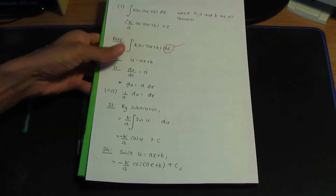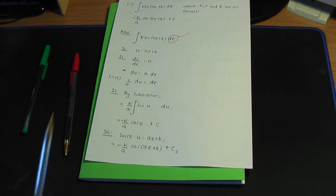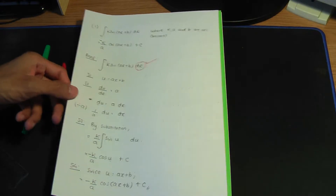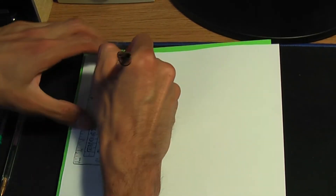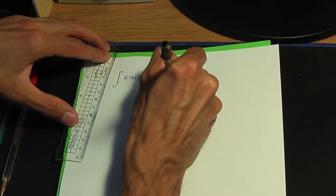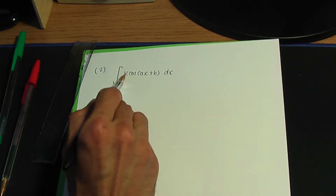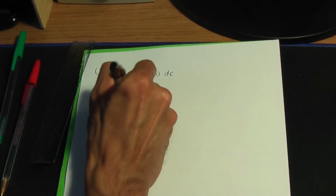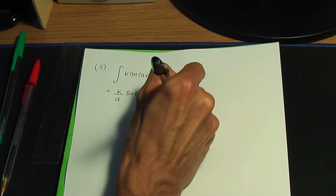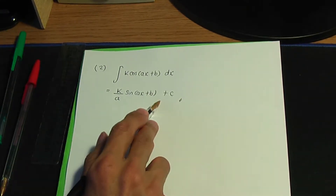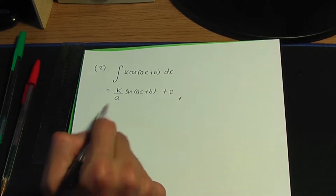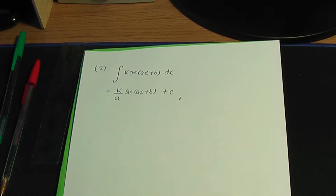Let me go through another related result. These results are related to the standard results. Number two: when we integrate k cos(ax + b) with respect to x — again, k, a and b are all constants — we should have k divided by a, sin(ax + b), plus c. We can only use this result if k, a and b are constants and the angle term is of the form ax + b.